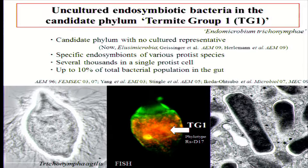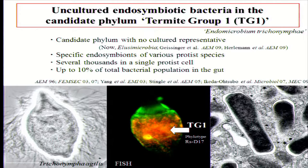The first target is an uncultured endosymbiotic bacteria in the candidate phylum Termite Group 1, which we designated TG1. At the time of the experiment, this was a candidate phylum with no cultured representative. The endosymbiotic species of this group are specific endosymbionts of various protist species. This cellulolytic protist harbors a dense population of TG1 endosymbionts.